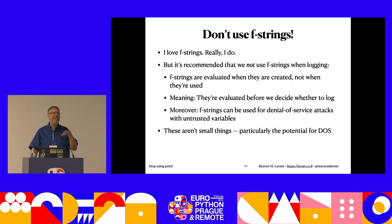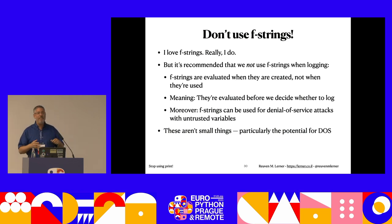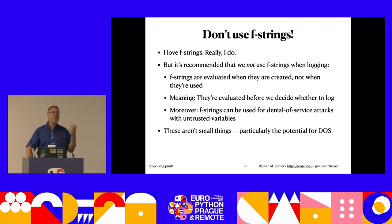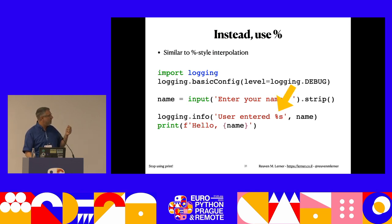Even worse, someone can feed you a very bad piece of information - a long piece of information - and create a denial of service attack by handing big data that you put in your log. When you're logging stuff from users or the network, that's a real risk. It turns out log4j in Java had a huge denial of service attack of this sort that cost an incredible amount of money across multiple companies. So instead of f-strings, use the percent sign formatting: 'user entered %s' and then pass the variable name as an argument.